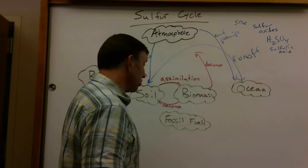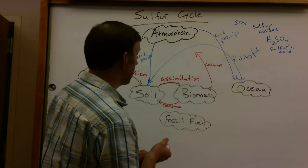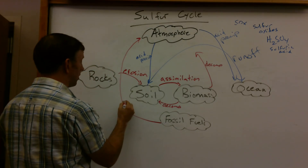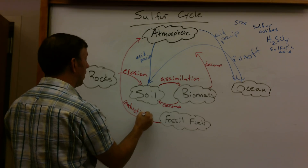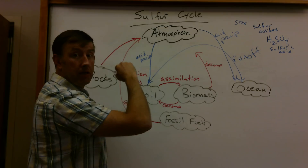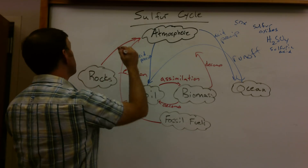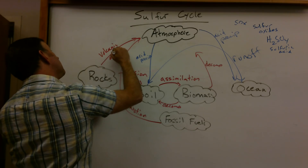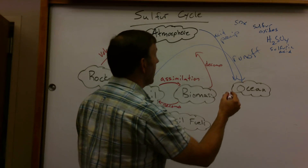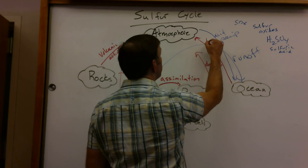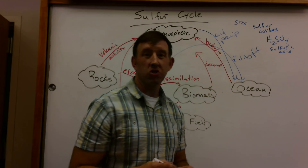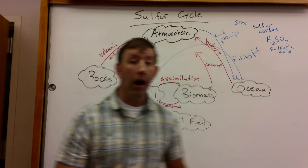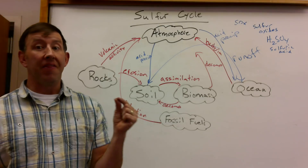What contributes those sulfur oxides to the atmosphere is combustion of fossil fuels, volcanic activity, and bacteria in the ocean, which produce dimethyl sulfide that can then react to form sulfur oxides. That is the gist of the sulfur cycle — I promised to keep this under five minutes.